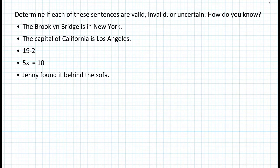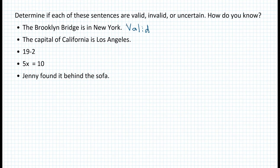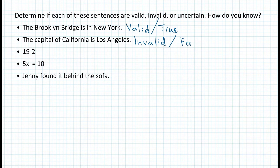An argument could be true or false, but sometimes it's also uncertain. For number one, the Brooklyn Bridge is in New York — that is definitely a valid argument, so we write valid, or true. What about the capital of California is Los Angeles? Well, it's definitely invalid because the capital of California is Sacramento, so we write false or invalid. What about 19 minus 2? It doesn't say it's equal to 17, making it valid, or equal to 5, making it invalid — we really don't know, so we write uncertain.